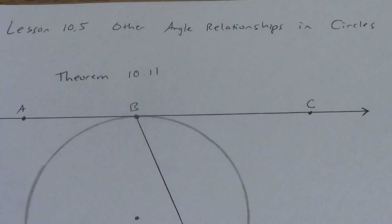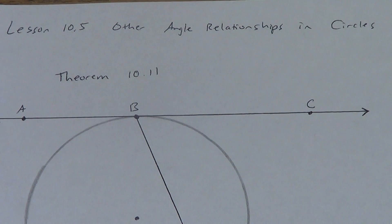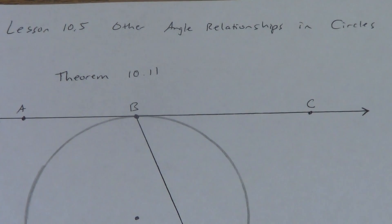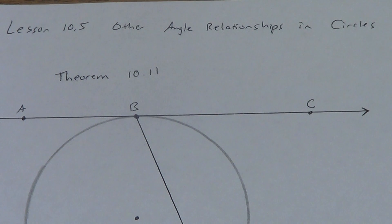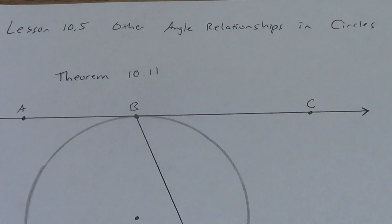Lesson 10.5 today. We're going to be talking about other angle relationships in circles. There are only three theorems in this lesson, so I'm going to do the first video of just the theorems themselves, and then in the second video we'll do a bunch of examples — definitely one for each, and maybe a couple backwards so you can see how to use some algebra.